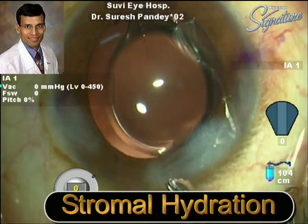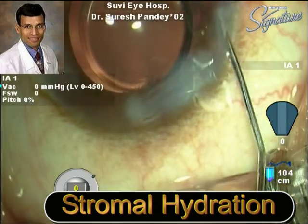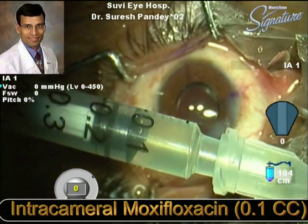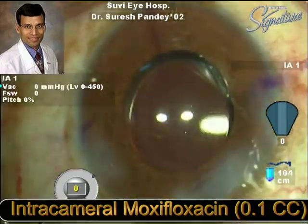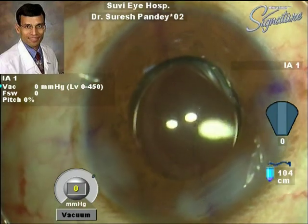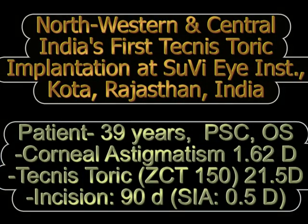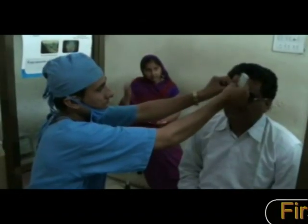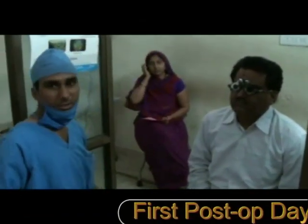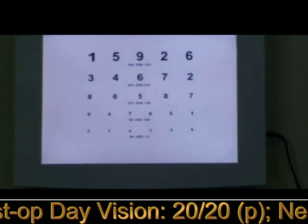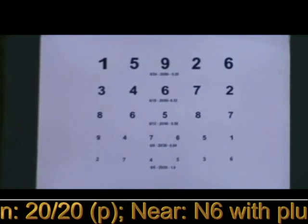The marks on the cornea are very well aligned along the astigmatic axis. The incision and side port are then sealed in the normal fashion, and as standard practice, intracameral moxifloxacin is injected into the anterior chamber. This was performed on October 9th, 2012, and post-operatively the patient had a vision of 6/6 unaided on the first post-op day, and N6 near vision with a +2.5 diopter add for near.